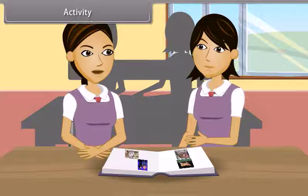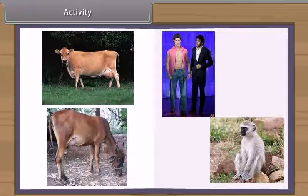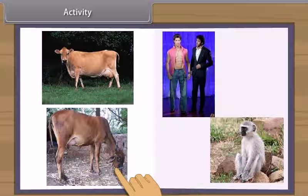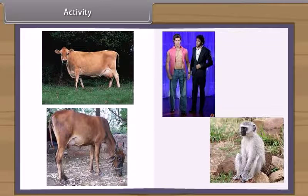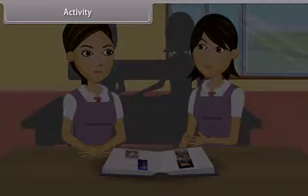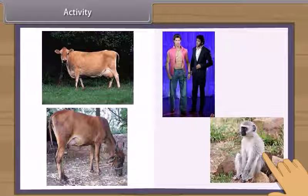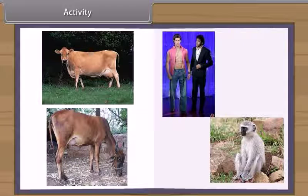Let us do an activity to find out the similarities within a genus and differences among various genera. When we study the physical characters of desi cow and jersey cow, we find very few differences. But when we see them in a crowd, jersey cow can be distinguished from a distance due to its height and stature. But when we look at cow and monkey, we find that man resembles more to a monkey than a cow, although all are mammals.